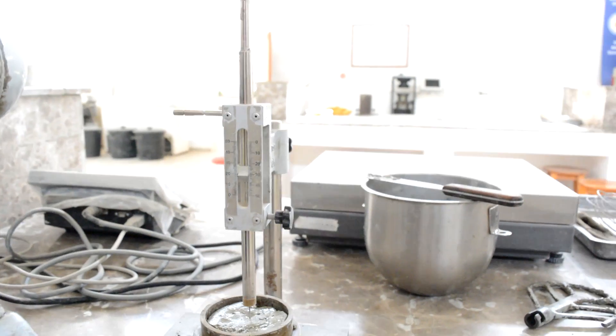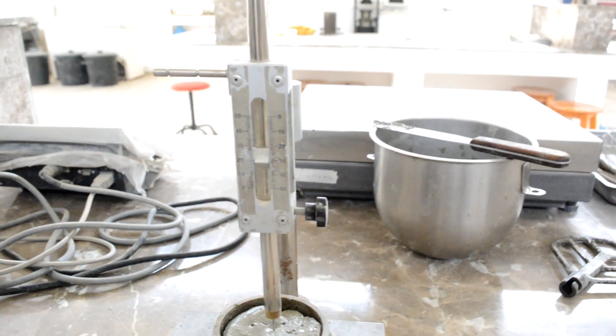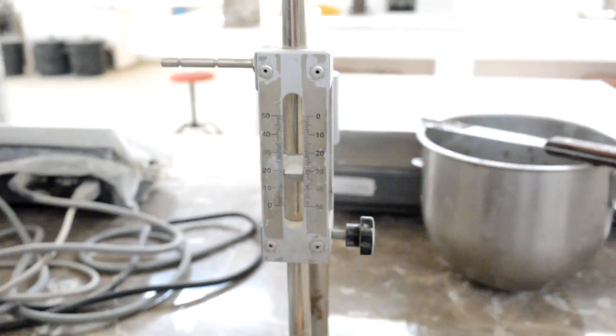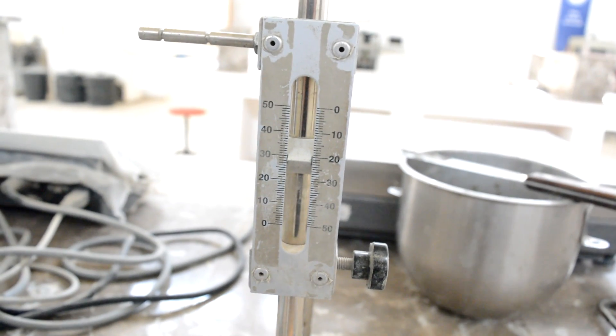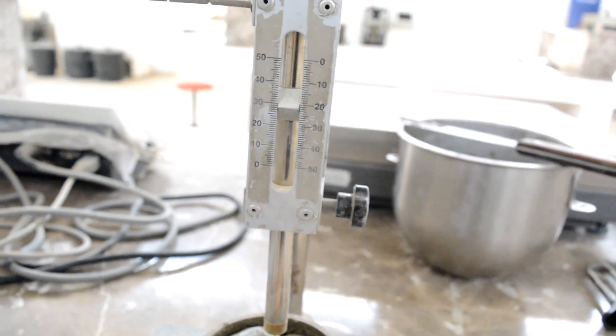Repeat this operation every 15 minutes until 25 millimeters or less of penetration is obtained. The time between the initial contact of cement and water and the penetration of 25 millimeters is the initial setting time.